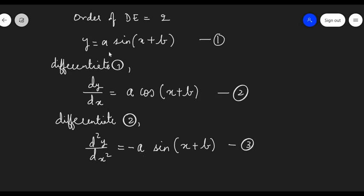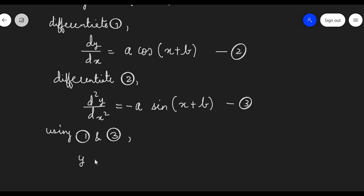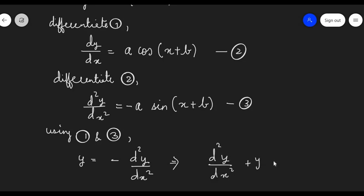Now I can substitute equation 3 to get the differential equation. From equation 1, a·sin(x + b) can be written as -d²y/dx². So y = -d²y/dx², and from here we get d²y/dx² + y = 0. This is the differential equation we needed.